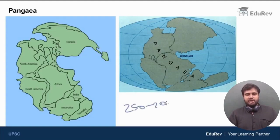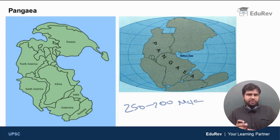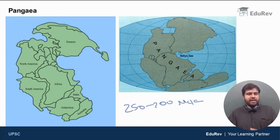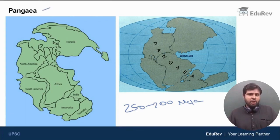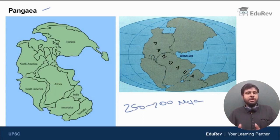Around 250 to 200 million years ago — we take a date range since we cannot determine the exact date — all the landmass on planet Earth was combined together to form one single continent, one super mega-continent called Pangaea, meaning all of the landmass on Earth. This Pangaea was surrounded by a mega-ocean called Panthalassa, meaning all of the water.